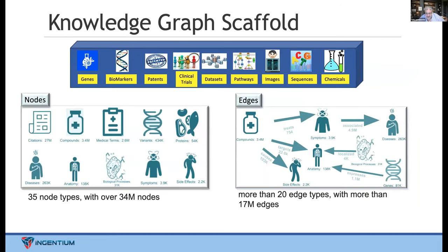We found about 20 different edge types with close to 20 million edges at this point. For example, these compounds treat these symptoms; this biological process takes place in this particular anatomy; these genes are expressed somewhere in particular; or these compounds treat a particular symptom. This gives us what we call our scaffold — the underlying base that we build on top of.